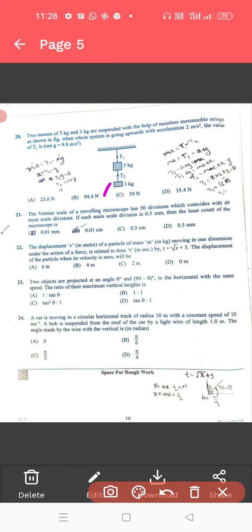For 21, the correct answer, the vernier scale, the correct answer is 0.01 centimeter. 22, here, the correct answer is for the 22, 0 meter, that is, displacement x meter is 0 meter.